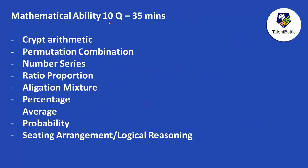The next section is mathematical ability — 10 questions and 35 minutes. The level of difficulty is going to be high, with around 3.5 minutes per question. There will be questions based on cryptarithmetic, permutation and combination, number series, allegation and mixture, ratio, percentage, average, and probability.